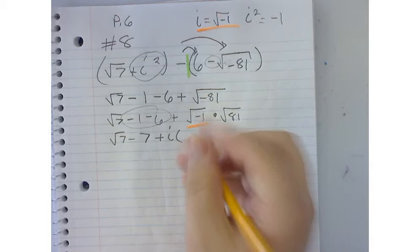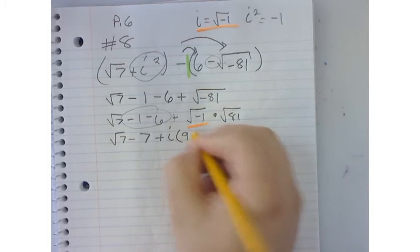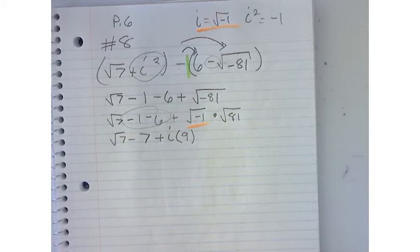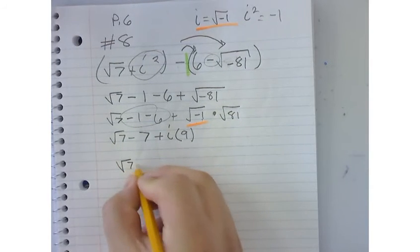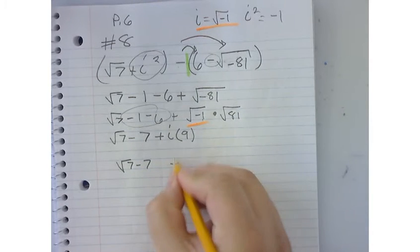91. Or not 91, 9. Why did I say it like that? Okay. So now to clean this up and make it look a little better, I'm going to say the square root of 7 minus 7 plus 9i.